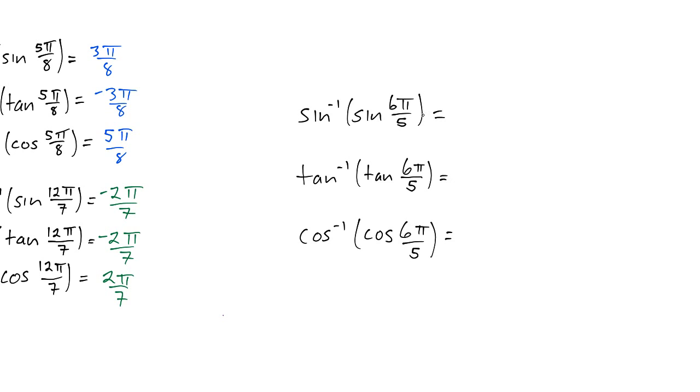Alright, let's take a look. 6π over 5, good idea to quickly sketch a circle, a unit circle, and see where is that 6π over 5. It's just over 5π over 5, which is half a circle, so we're right around there.